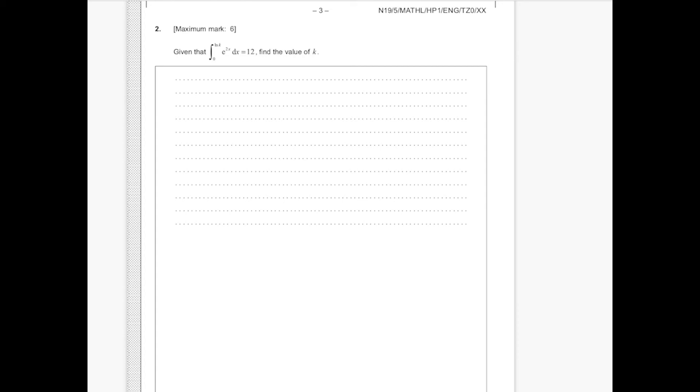We're trying to integrate e to the power of 2x. We know that the integration of e to the power of 2x is going to be e to the power of 2x multiplied by 1 over 2. We can do a quick check because if you were to differentiate this, we'd get e to the power of 2x and the multiplication of the differentiation of 2x using the chain rule. So these would cancel out. This would become 2, which would cancel out with this one.